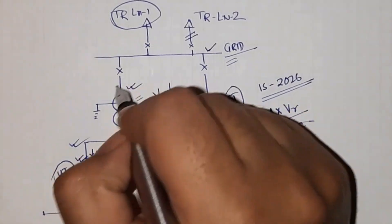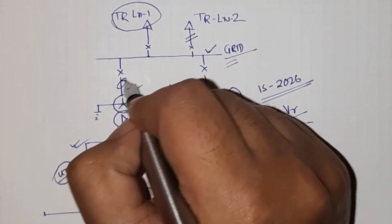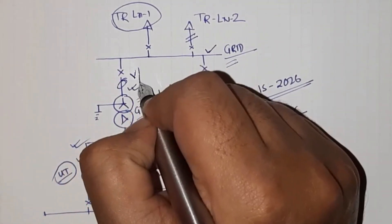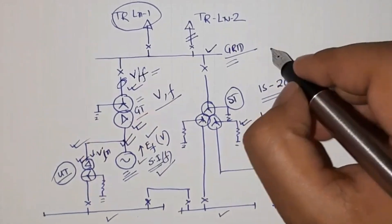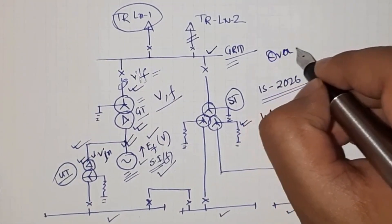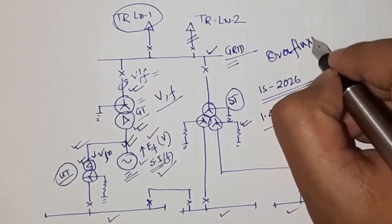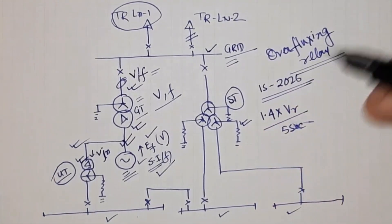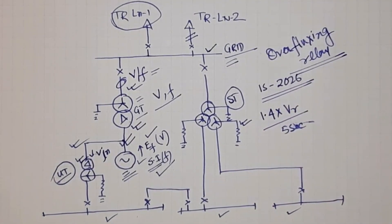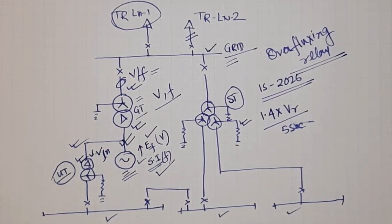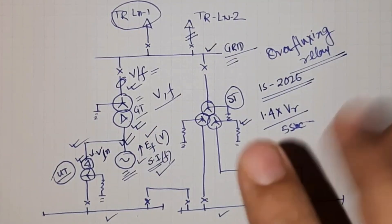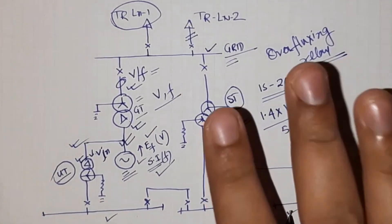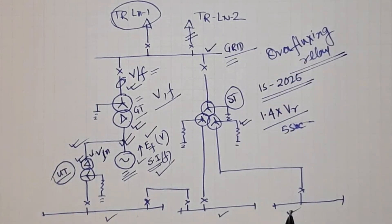That is also the reason why the generator transformer includes a V/f relay, also called an over-fluxing relay. The over-fluxing relay monitors the V/f ratio to detect over-fluxing occurring in the transformer and isolates the system from the main supply when required. This is the main difference between a transformer connected with the generator and a station transformer.